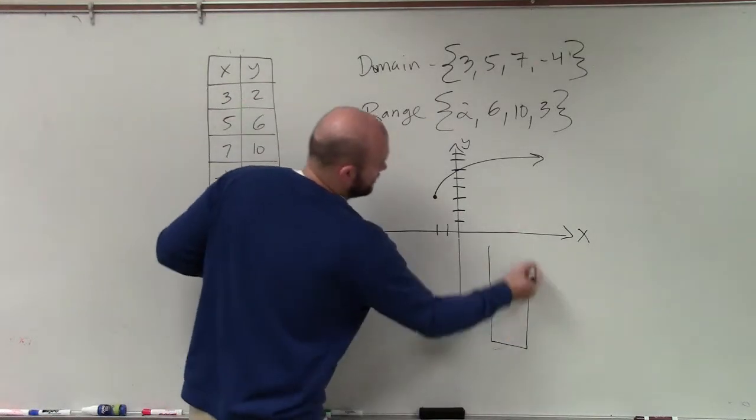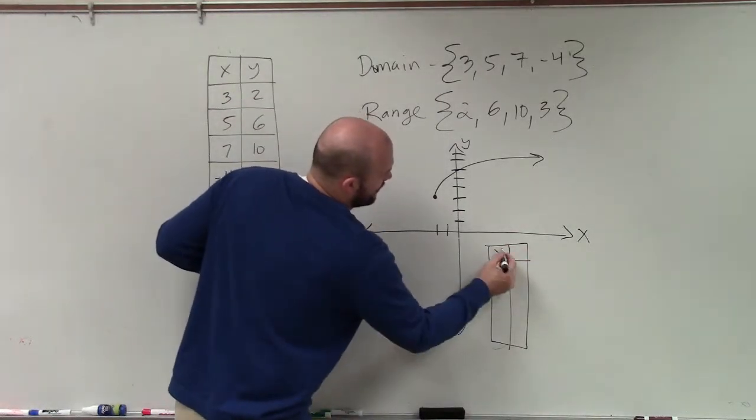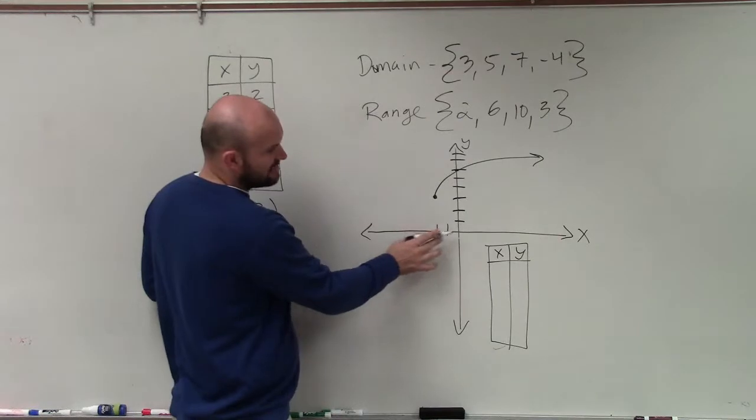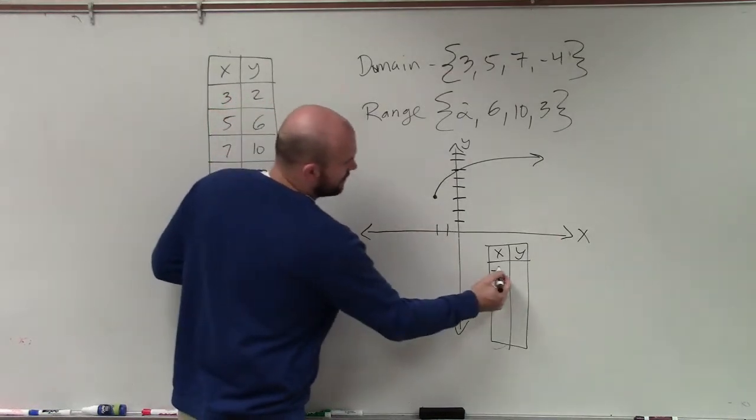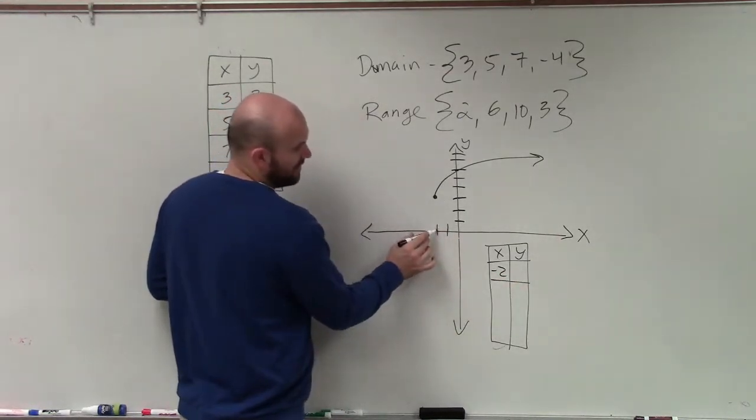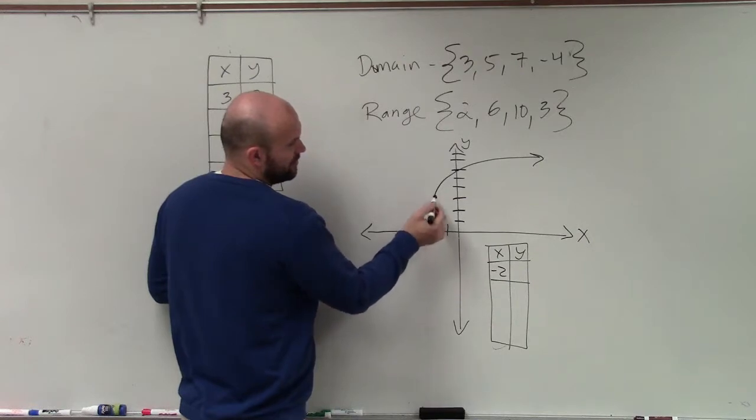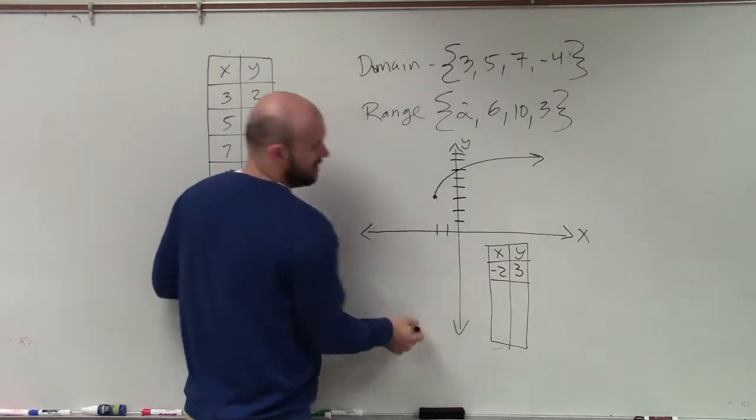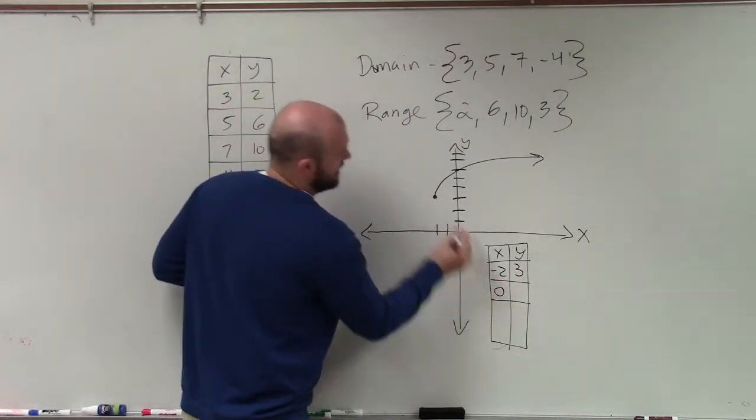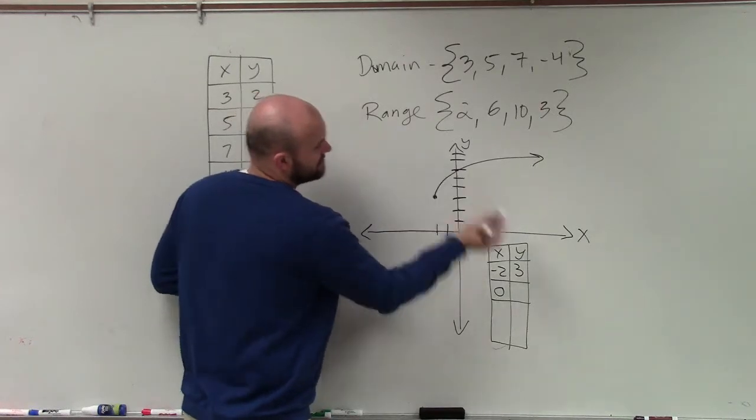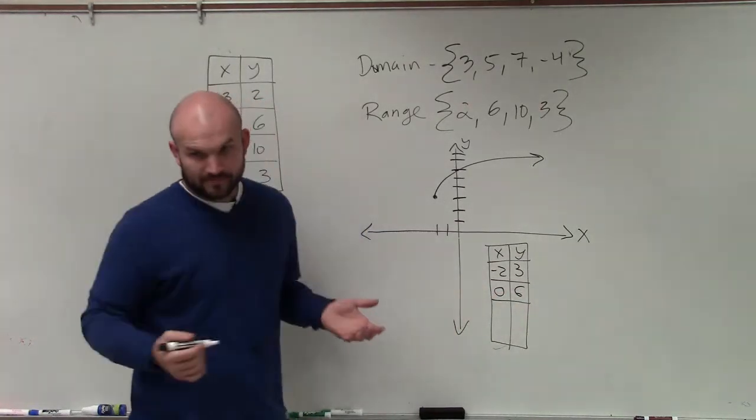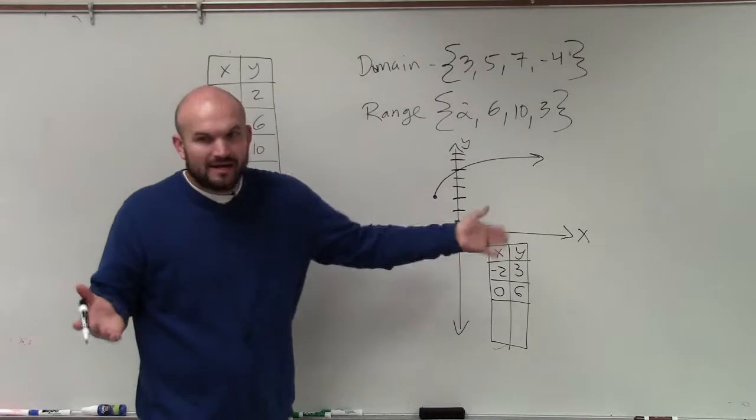Well, if I was going to create a table here, I could say, what are some x and y points? x here is negative 2. At negative 2, what's the y value? 1, 2, 3, right? What about when x equals 0? That is 1, 2, 3, 4, 5, 6. Do you agree with me? And we could keep on doing that for on and on.